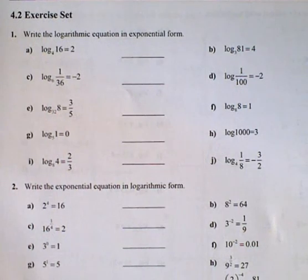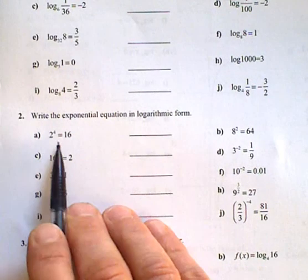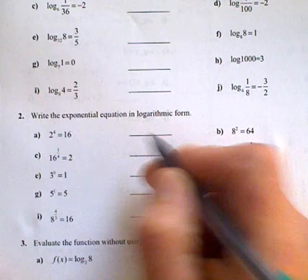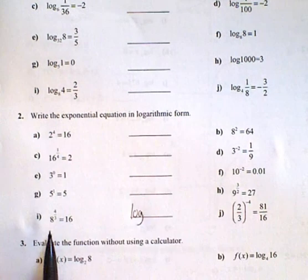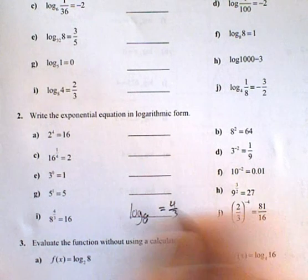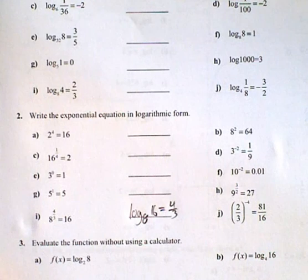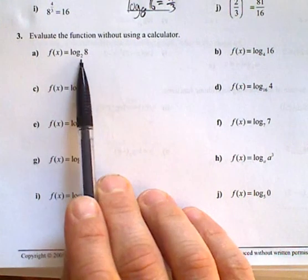So let's look at these now, write these in logarithmic form. So log, always start. Let's do this one. Log, base what? Base 8 is equal to the exponent of 4 thirds, and the 16 goes in there. Evaluate the following without a calculator. 2 to the power of what is 8? 8 to the power of what is 2? 5 to the power of what is 1?